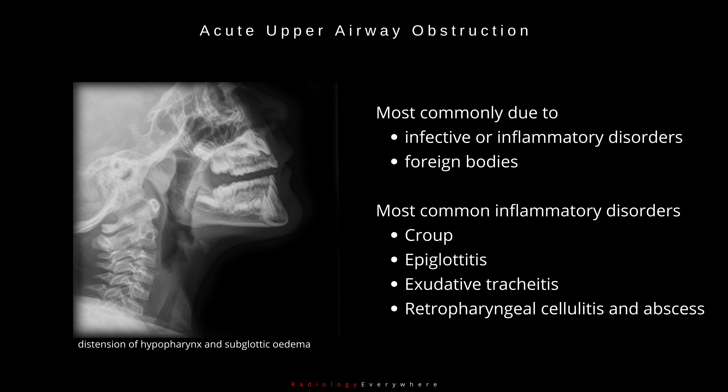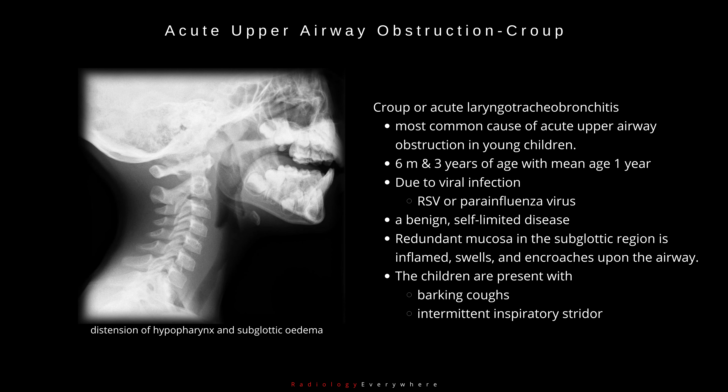Most common inflammatory disorders include croup, epiglottitis, exudative tracheitis, and retropharyngeal cellulitis and abscess. Croup, or acute laryngotracheobronchitis, is the most common cause of acute upper airway obstruction in young children.